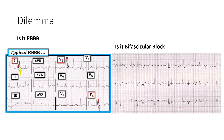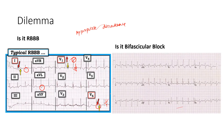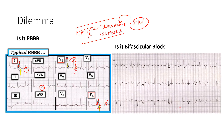In a normal RBBB, you get a very prominent S wave. There is something called the rule of appropriate discordance: whenever there is a bundle branch block, the ST segment and T wave will be in the direction opposite to the QRS complex. In lead V1, if there is a positive deflection — the R wave — you get ST depression with T wave inversion. In lead V6, with an S wave, you get a positive T wave and positive ST. This is normal for any bundle branch block. If this is lost, that is a marker of ischemia.